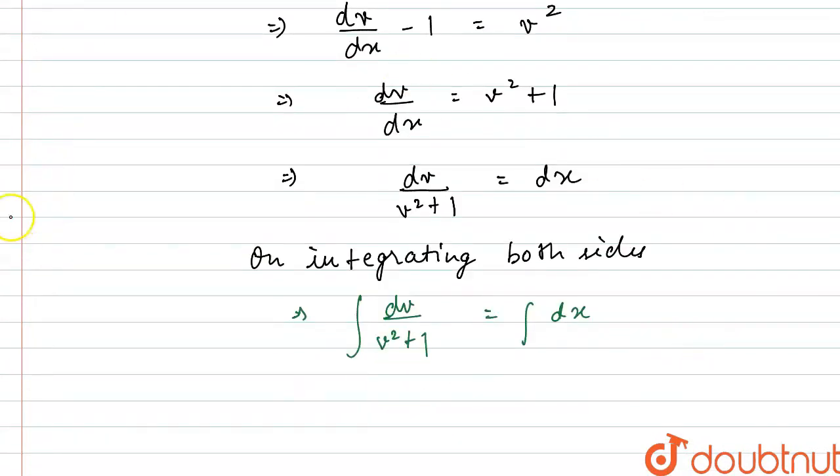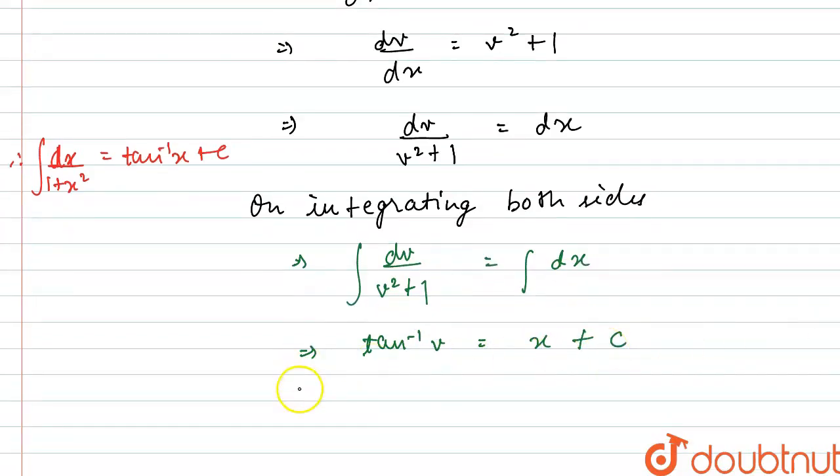Using standard integration results, we know integration of dx divided by 1 plus x squared equals tan inverse x plus some constant c. So, integral of dv divided by v squared plus 1 will be tan inverse v equals x plus some constant c.